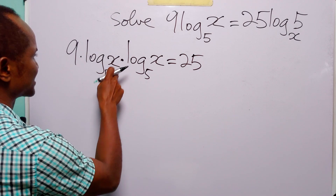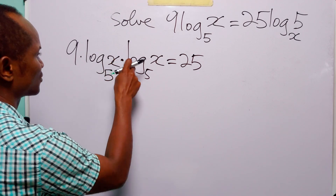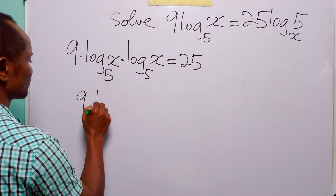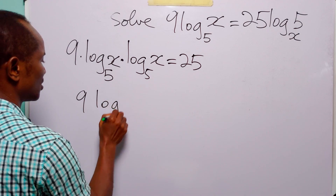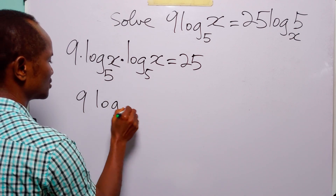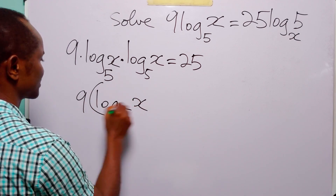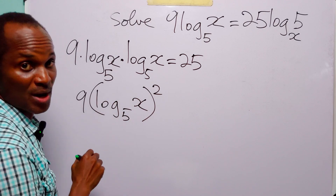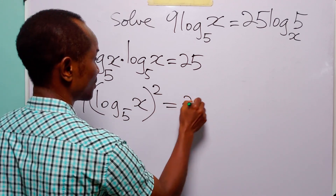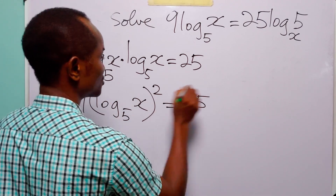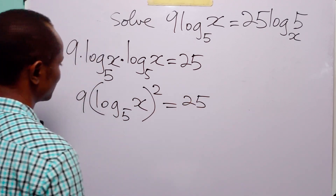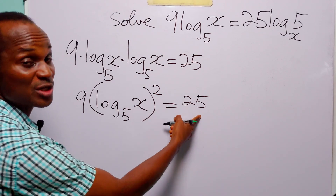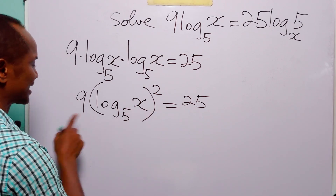Log to base 5 of x times log to base 5 of x is equal to (log to base 5 of x)², and this is equal to 25. Next, we divide both sides of this equation by 9.